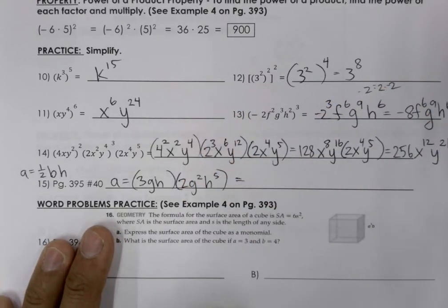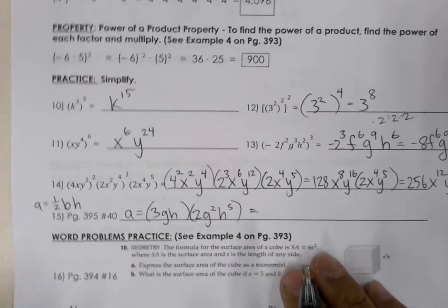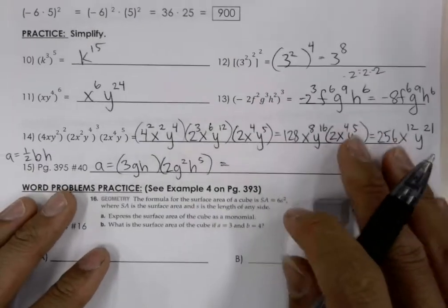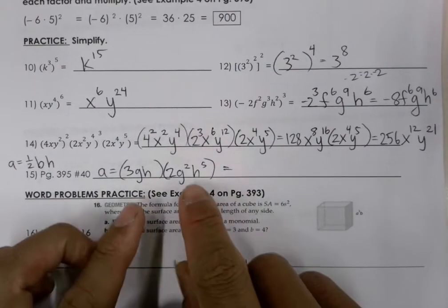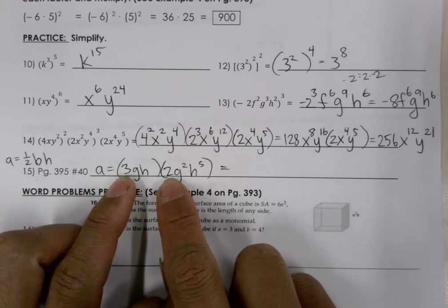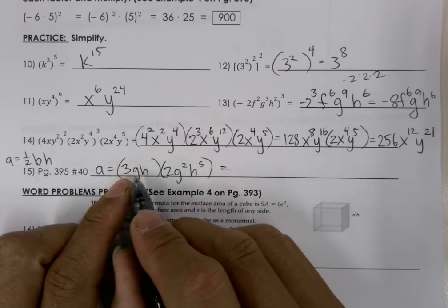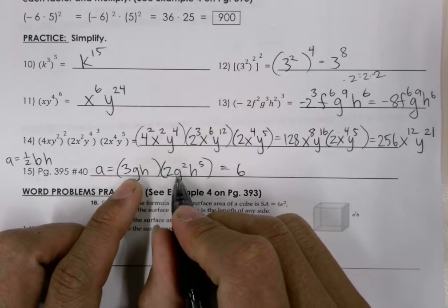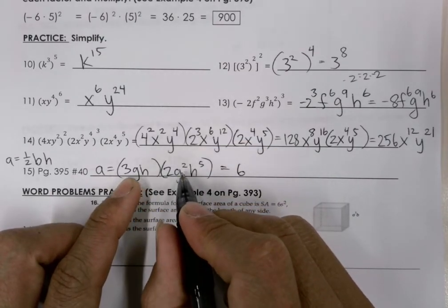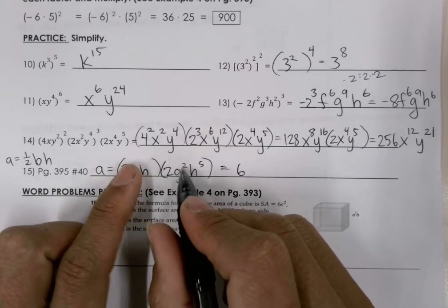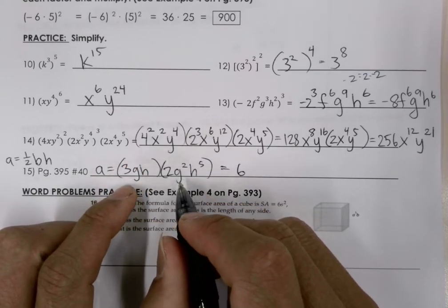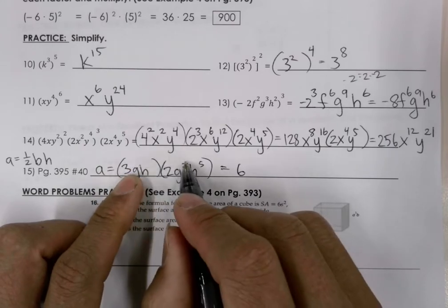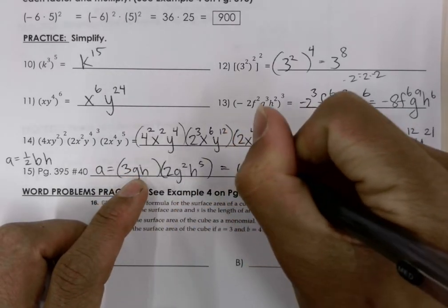And so we're going to use the product of powers property. And we're going to go ahead and multiply these numbers here. So we've got 3 times 2 is 6. g times g squared. What do we do? We add the exponents using the product of powers property. The exponent here is 1. So we're adding 1 with 2. So we get g to the 3.